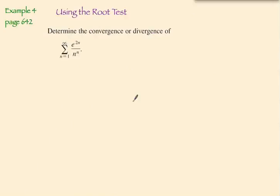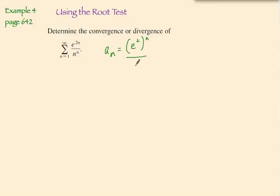The root test is particularly suited to terms with n-th powers, and that's exactly what we have here. Let me rewrite this a sub n term as e-squared to the n over n to the n. Now let's apply the root test: we take the limit as n approaches infinity of the n-th root of the absolute value of this term.